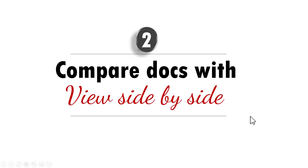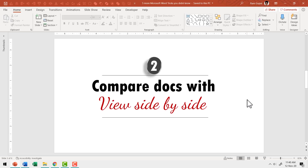The next useful tip is you can compare docs with the View Side by Side option. Many times as a reader, you are required to compare two documents side by side. Let us say you're an author and you want to improve the first draft of your novel. You can use the View Side by Side option to improve your draft.